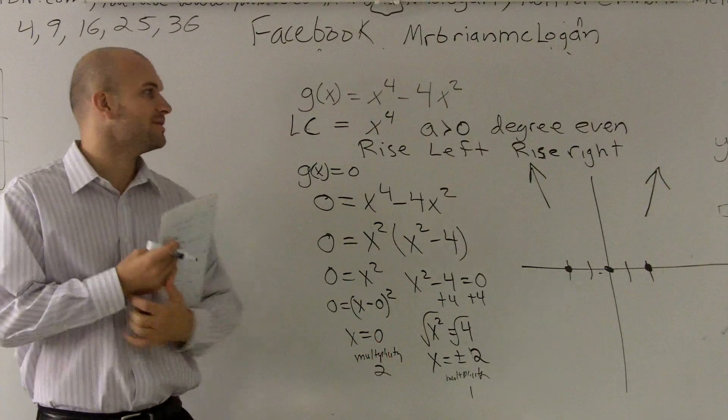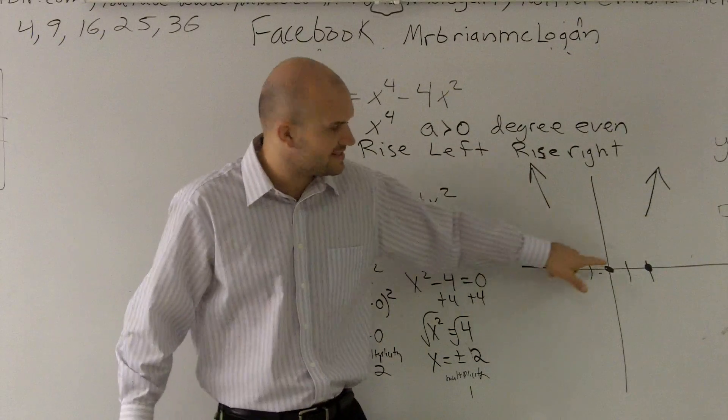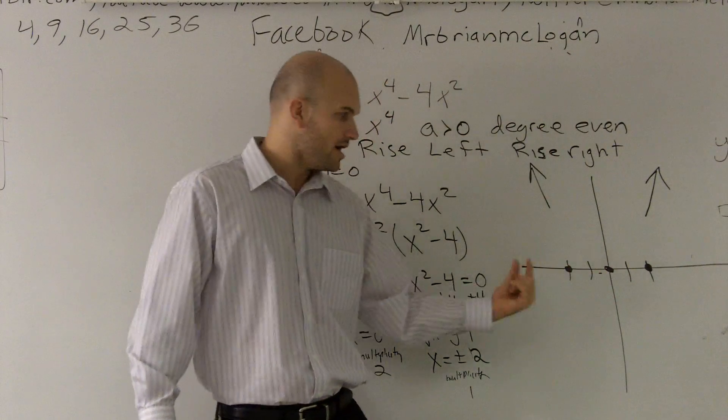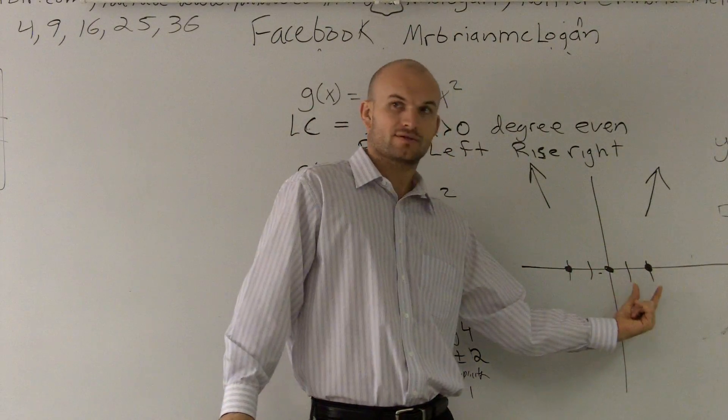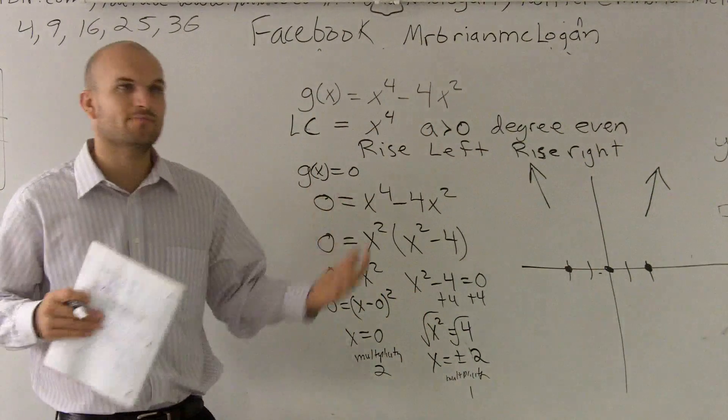Now, the last thing we just need to do is, by using the intermediate value theorem, we know that there exists on this graph a point between these two zeros. We also know there's a point between these two zeros. Now, there's one more important thing I want you to remember.